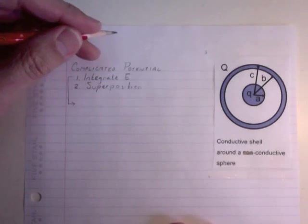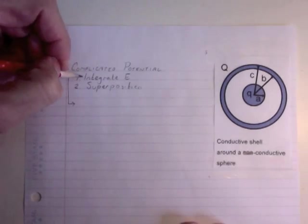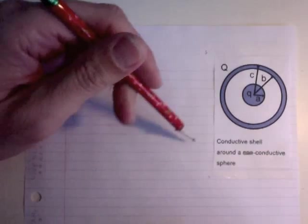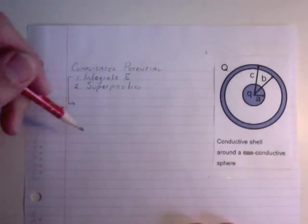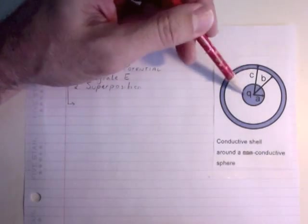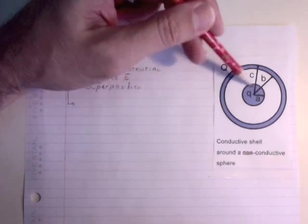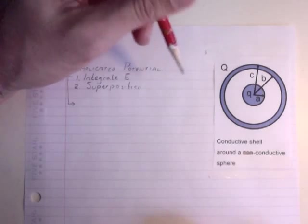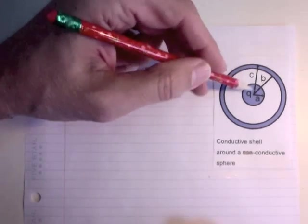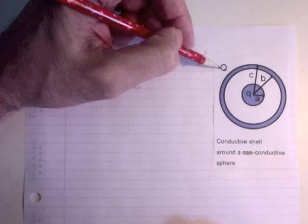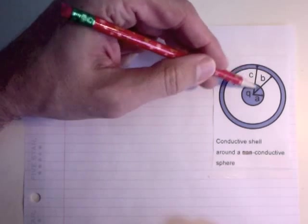I'm going to do this by just integrating the E field and observing from the outside in. I'm coming in from infinity. Now this is a conductive shell, and previously I did it with a non-conductive. I'm going to do it with a conductive sphere inside. So they're both conductive, charge Q, charge capital Q, labeled A, B, C.